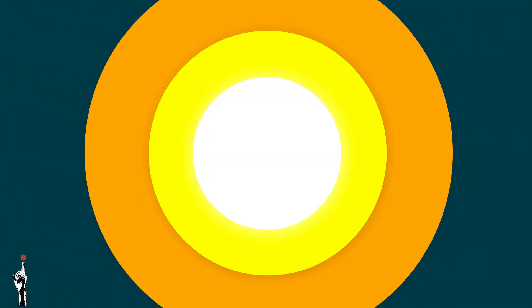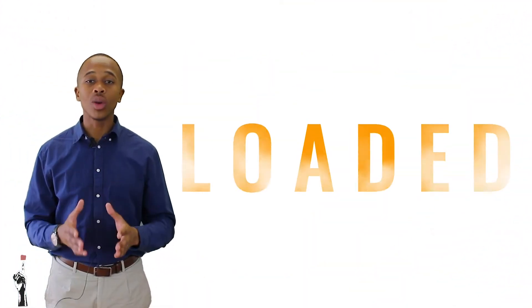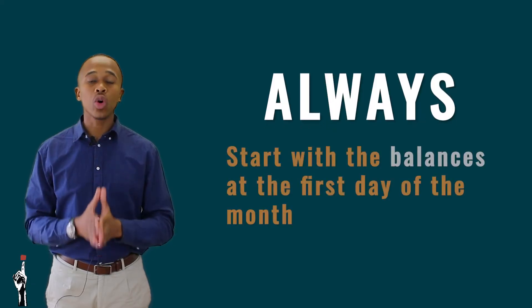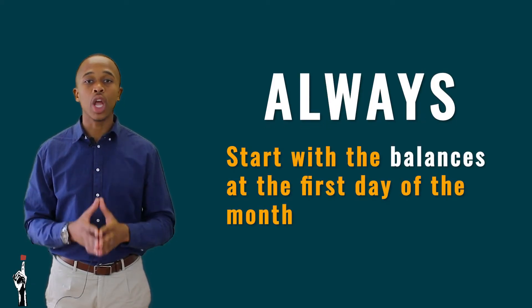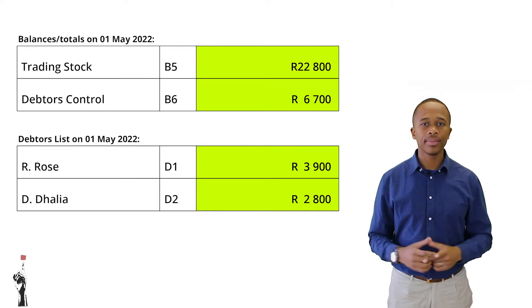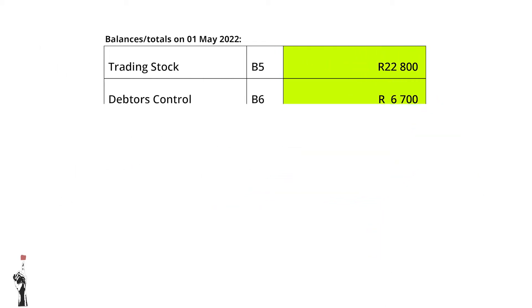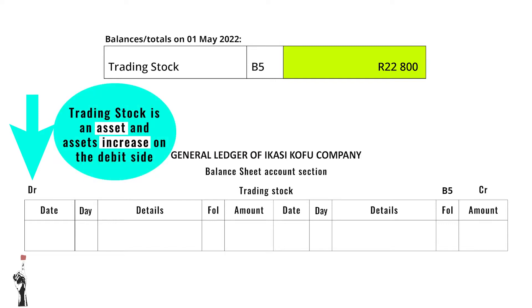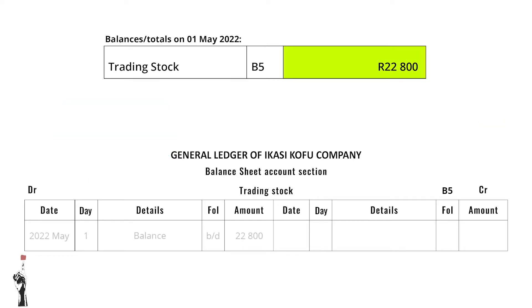Grade 9s, this is a loaded lesson so let's take it bit by bit. We always have to start with the balances on the first day of the month. We will first record the trading stock balance in the general ledger. This will be recorded on the debit side, as trading stock is an asset and assets increase on the debit side.